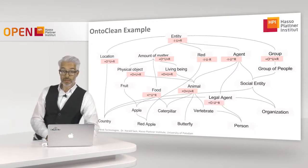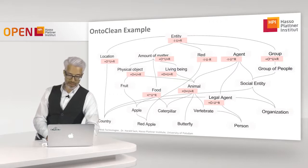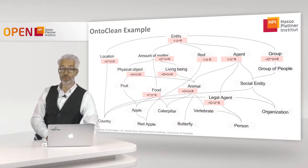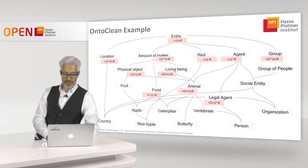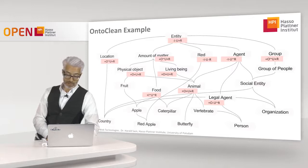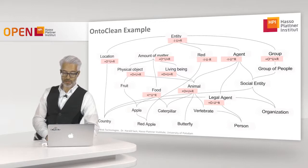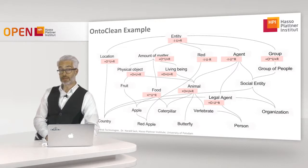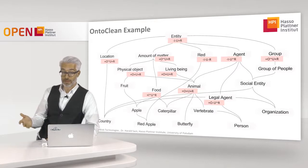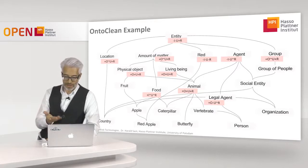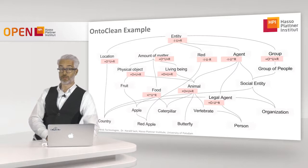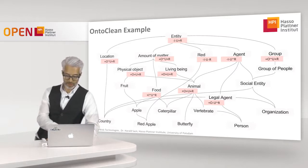For 'legal agent': as a subclass of agents, legal agents get new identity criteria. Some might be considered a whole, others might not — so minus U. And like the agent, if the legal agent role ceases — meaning the role of being a legal entity ceases — the entity probably still continues, so it is anti-rigid.